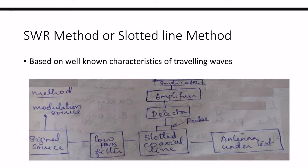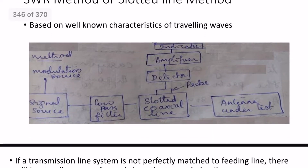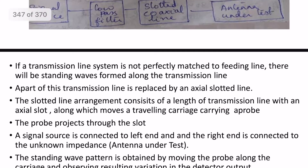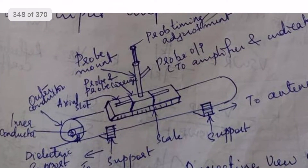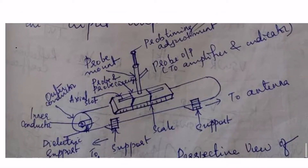For high frequency, we can use the slotted waveguide — the slotted line method. The slotted line method uses a waveguide. This is the slotted line method and waveguide method for high frequency impedance measurement.